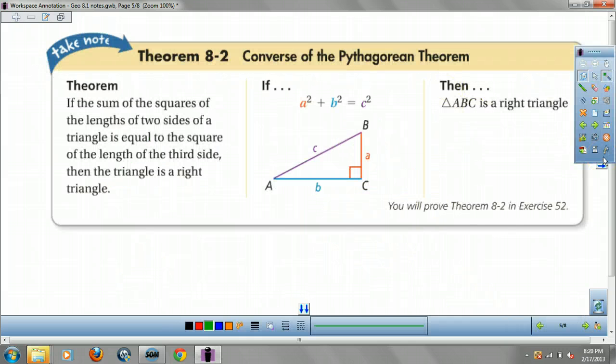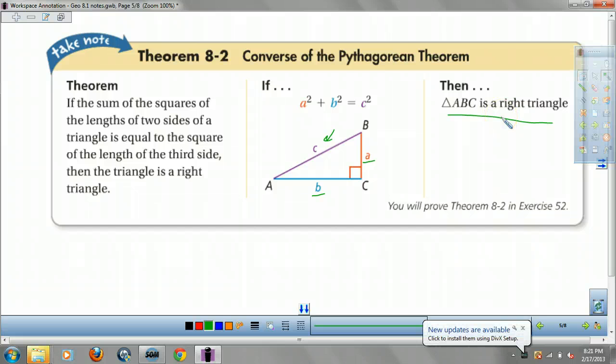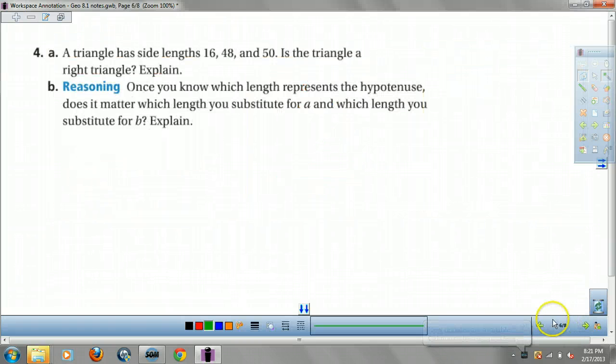The converse of the Pythagorean says, if leg squared plus leg squared equals C squared, then it's a right triangle. So it's the same, but opposite. It's the reverse. Converse. Basically, use it to check to see if the triangle is a right triangle. Example.